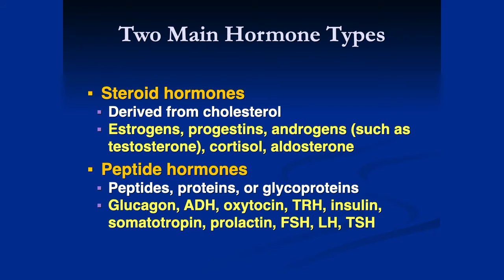Then we have peptide hormones, which are proteins or glycoproteins. Examples include glucagon, antidiuretic hormone, oxytocin, insulin, somatotropin, prolactin, follicle-stimulating hormone, and luteinizing hormone.